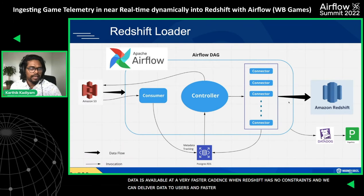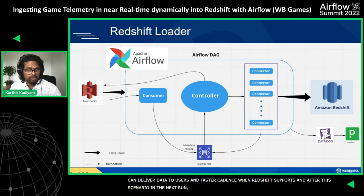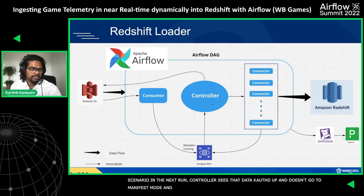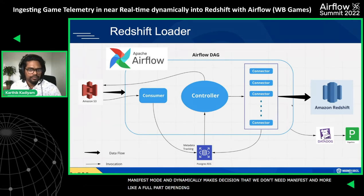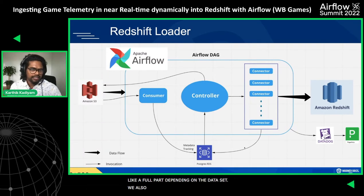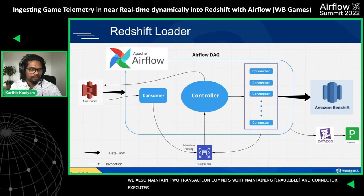After catching up, in the next run the Controller sees data is current and dynamically switches back from manifest mode to either prefix mode or full path mode depending on the dataset. We also maintain true transactional commits by keeping an audit in RDS — once the Connector executes the COPY command, it records the transaction in the audit table, addressing data quality so there are no gaps or dupes.